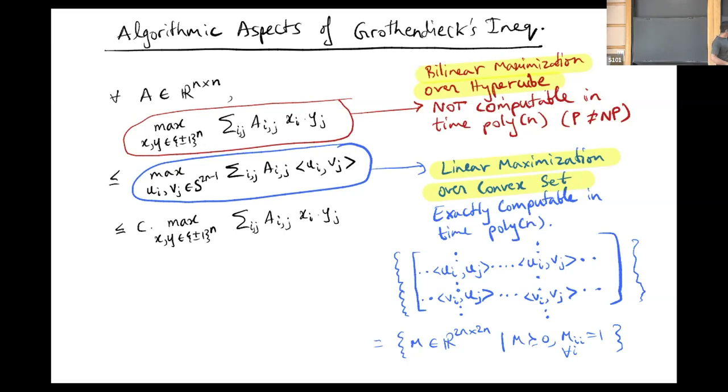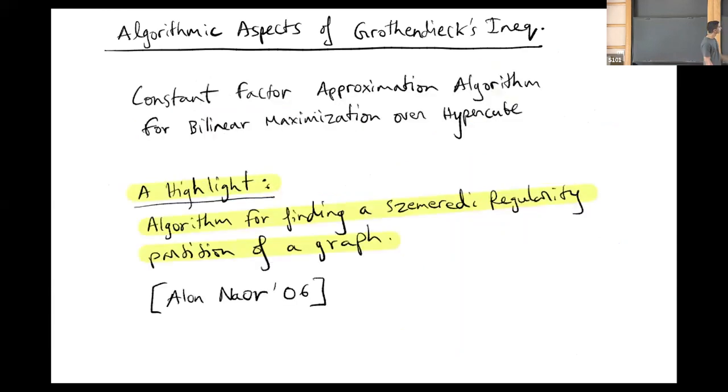We can reinterpret Grothendieck's inequality as saying that there is a constant factor approximation algorithm for bilinear maximization over the hypercube. One example highlight of this algorithm is that you now get an algorithm for finding the semi-definite regularity partition of a graph. Semi-definite regularity lemma says that any graph sufficiently large can be partitioned into constantly many pieces where the edges between the pieces have pseudo random behavior. This type of partition is really useful in combinatorics and optimization, and one outcome is an algorithm for finding such a partition in polynomial time.